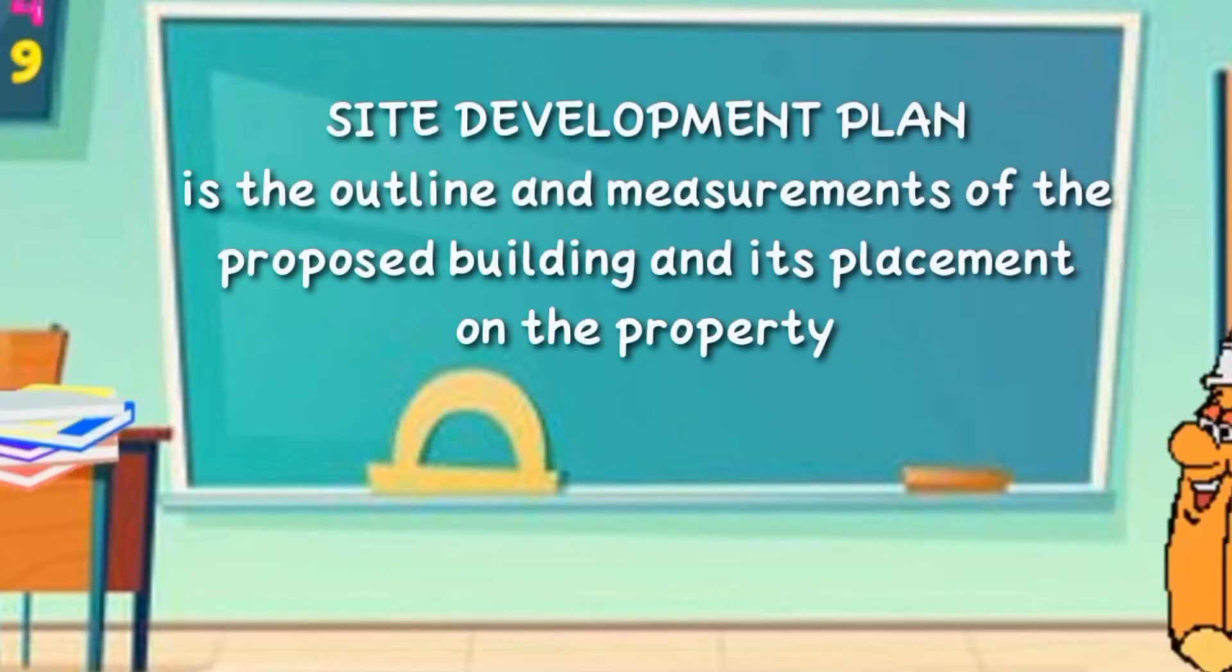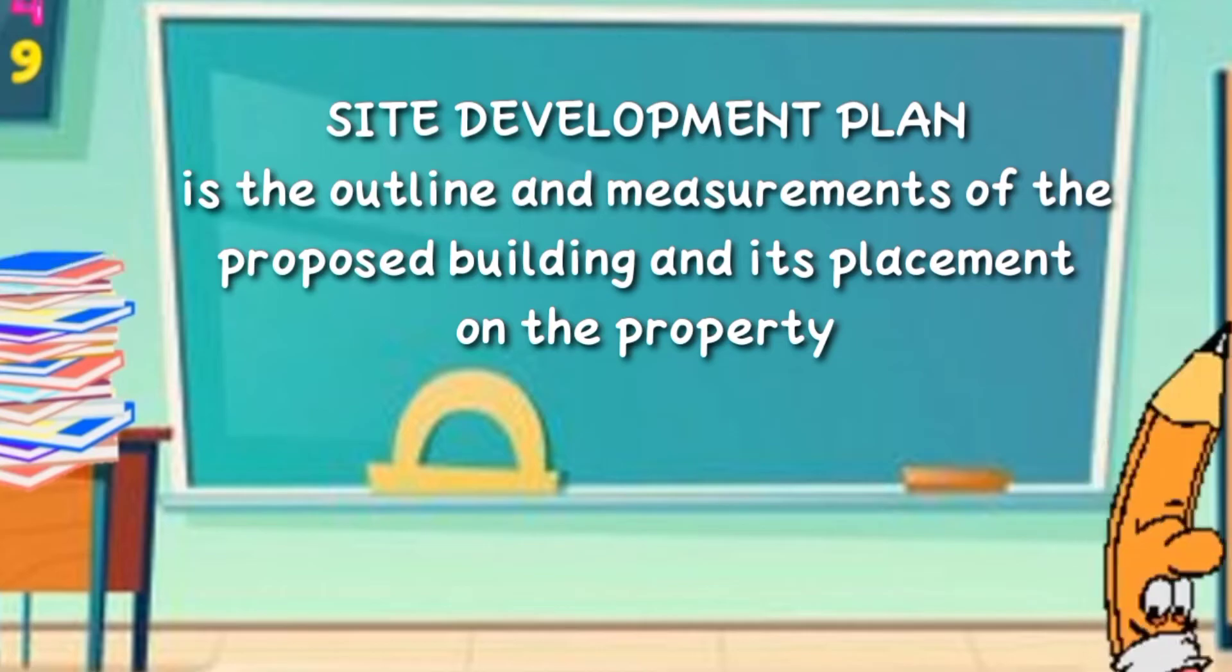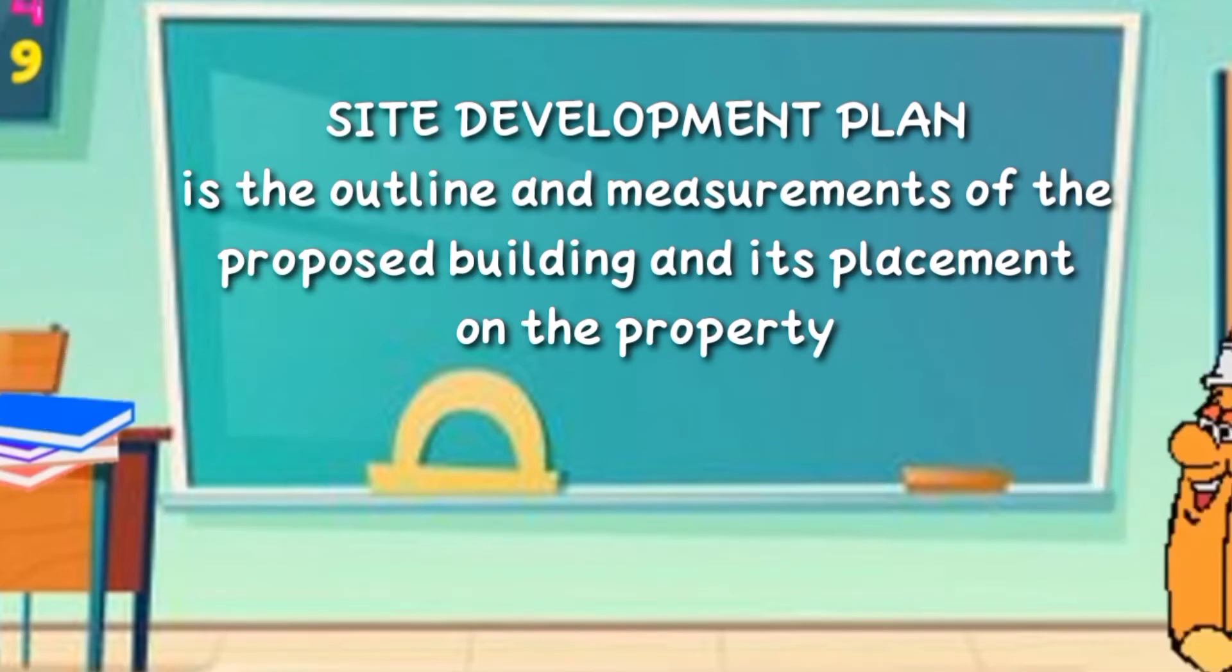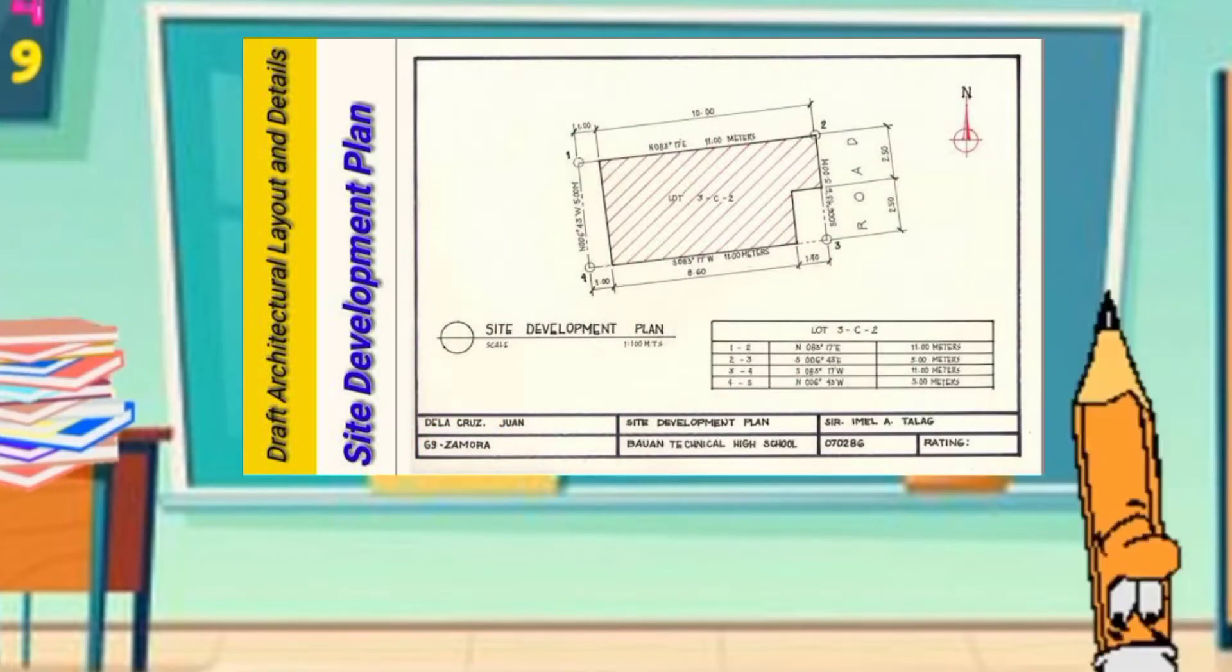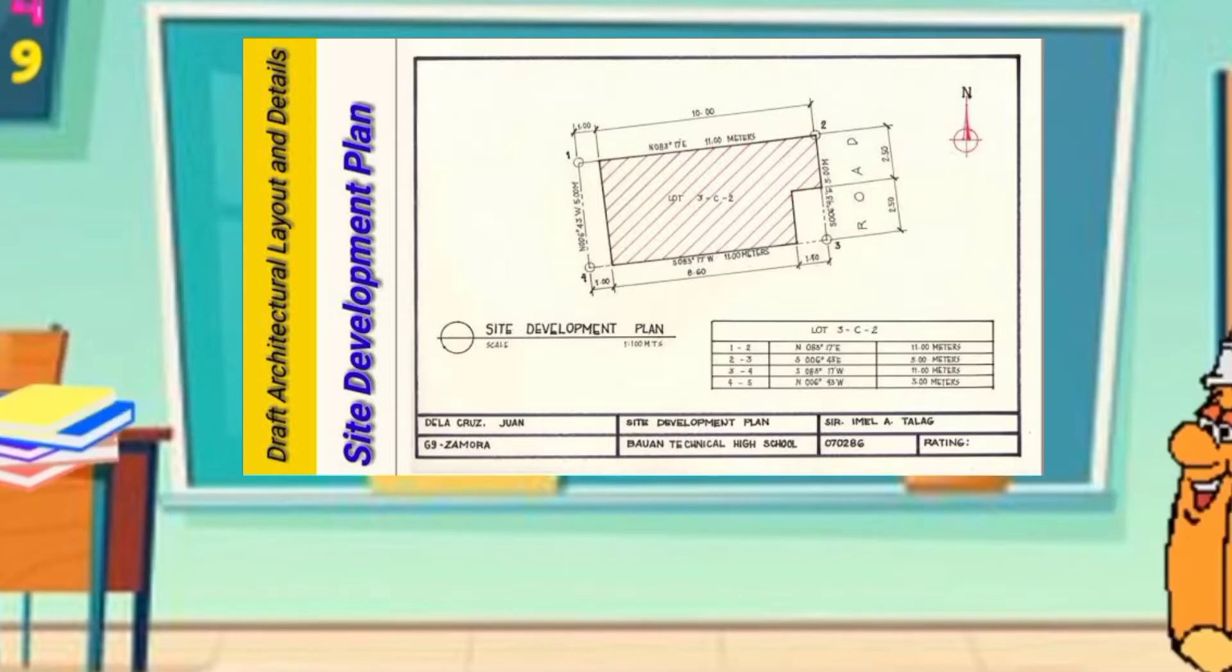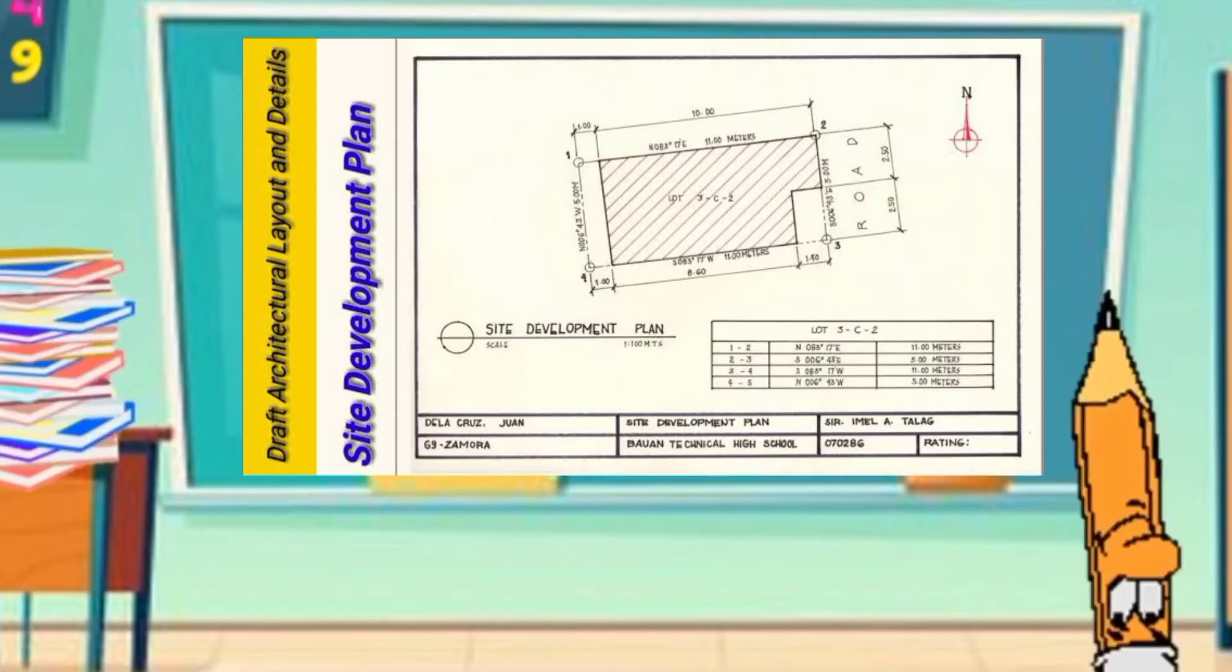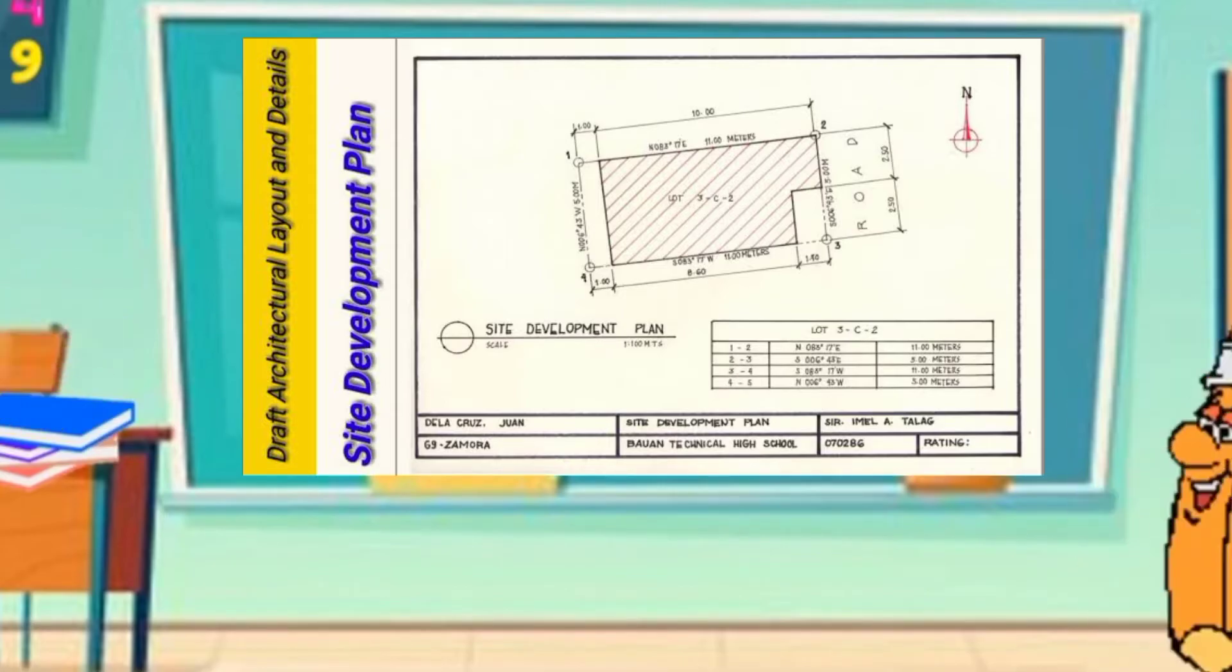The Site Development Plan is the outline and measurements of the proposed building and its placement on the property. This shows the position and location of the building with property line, setbacks, approaches, grade contours, landscapes,